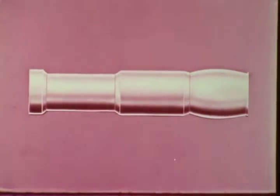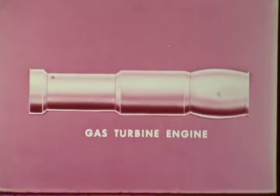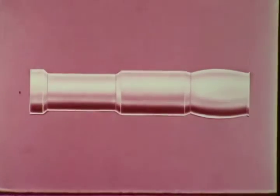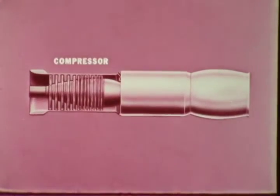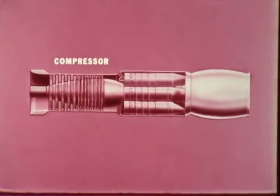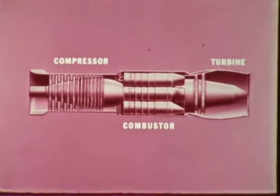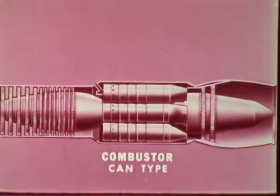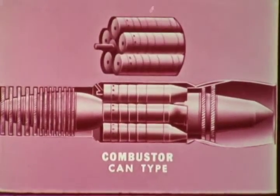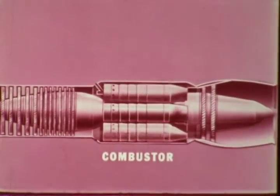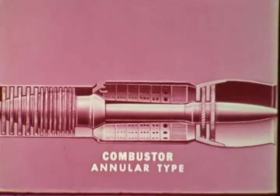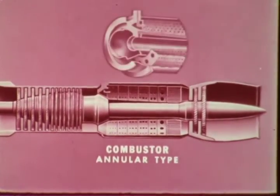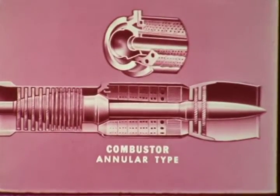Let's begin by reviewing the operation of the basic gas turbine engine. The engine is divided into three sections: compressor, combustor, and turbine. This can-type combustor section has several combustor chambers. The other common type is the annular combustor, in which all combustion takes place in one large chamber.